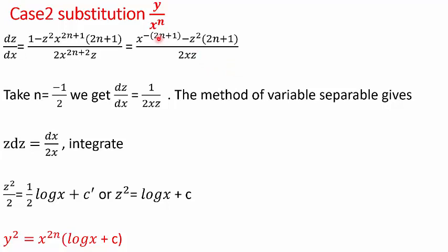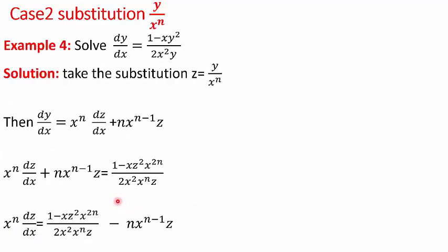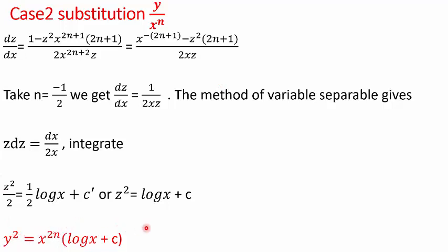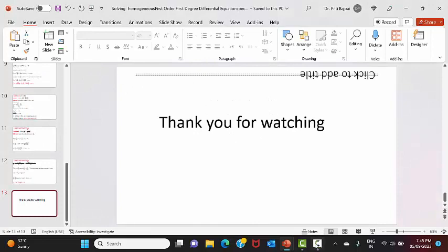If we take n = −½, then 2n + 1 = 0, so the z² term vanishes and x^(−2n+1) = x^0 = 1. The equation reduces to dz/dx = 1/(2xz). Using variable separable and integrating, z·dz = dx/(2x) gives z²/2 = ½·log x + c', so z² = log x + c. Substituting z = y·x^(1/2) (since n = −½ means z = y/x^(−1/2) = y·x^(1/2)), the solution becomes y²·x = log x + c, i.e., y² = (log x + c)/x. In the next video, we will solve exact differential equations.